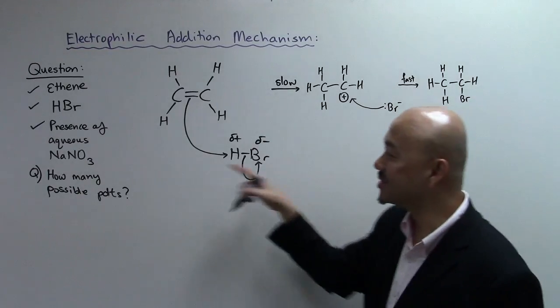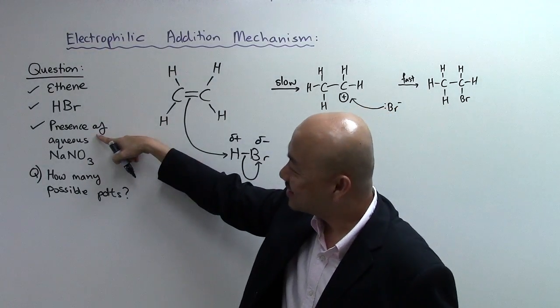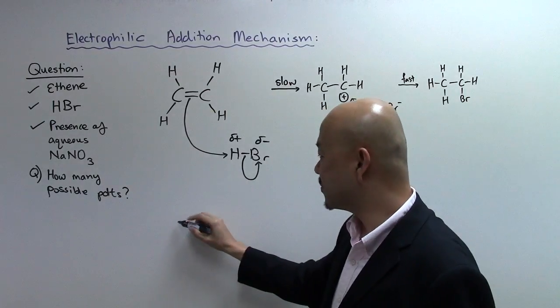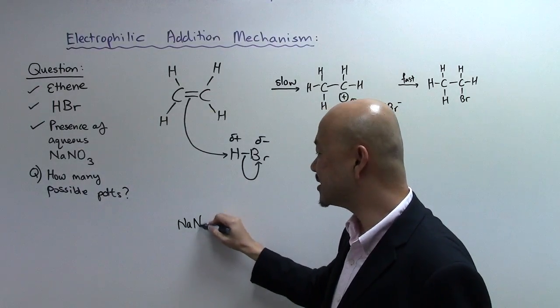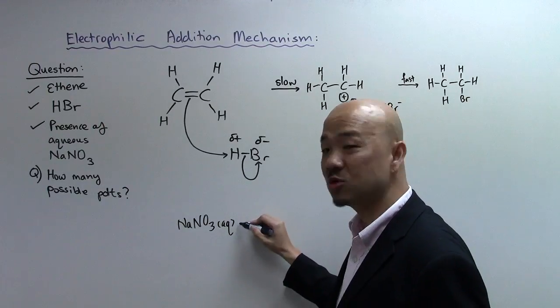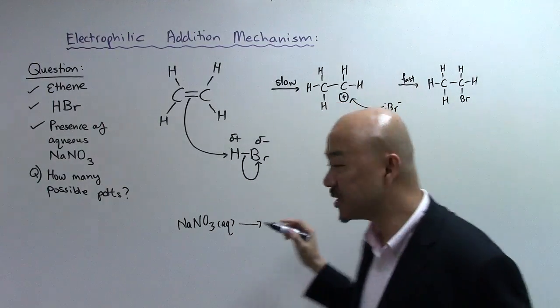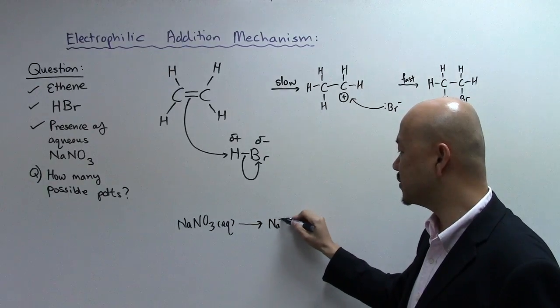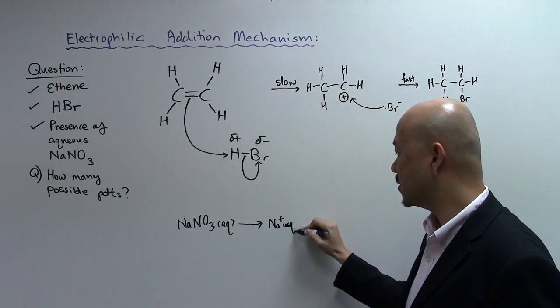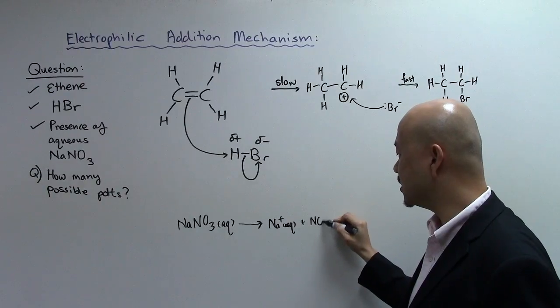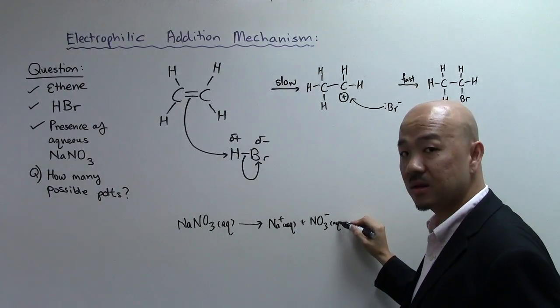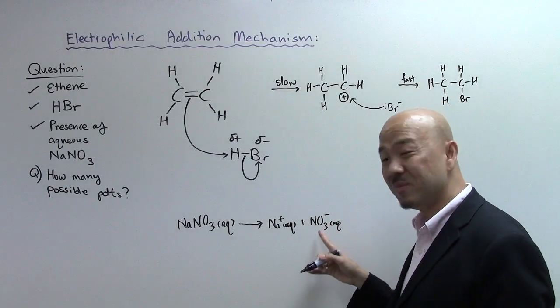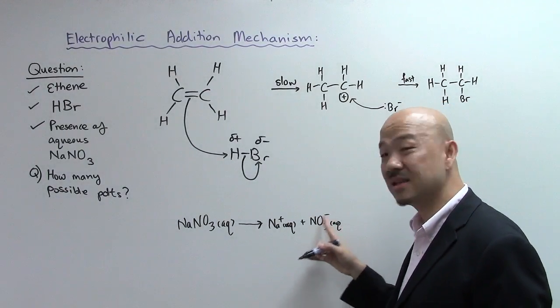Now what happened is in this question, it states that it occurs in the presence of aqueous sodium nitrate. You need to appreciate that you learned this long time ago, that sodium nitrate is a soluble salt and it's an aqueous solution. So what happened is that it will dissociate to give you your sodium and more importantly your nitrate ions. Your NO3- ion which has a lone pair, at least a lone pair there and it's negatively charged.